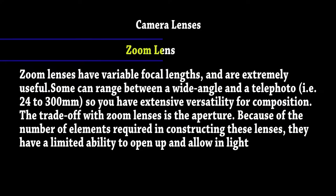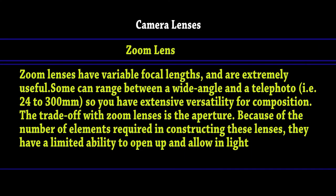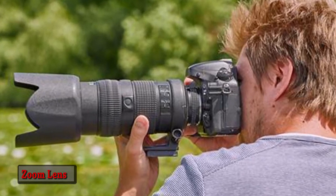Zoom lenses have a variable focal length and are extremely useful. Some can range between a wide-angle and telephoto, so you have extensive versatility for composition. The trade-off with zoom lenses is the aperture — because of the number of elements required in constructing these lenses, they have a limited ability to open up and allow in light.